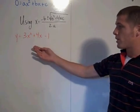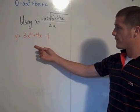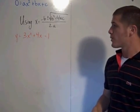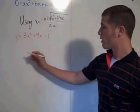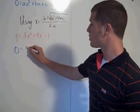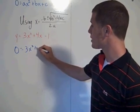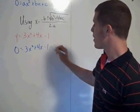So I have an example here, y equals 3x squared plus 4x minus 1. So the first thing you have to do is set y equal to 0. So you have 0 equal to 3x squared plus 4x minus 1.